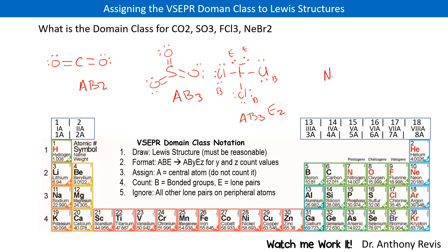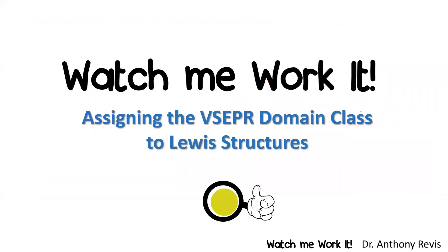The last one here, NeBr2. It's going to have two groups. I have to expand the octet by promoting two electrons in this case. And so now I've drawn the Lewis structure, and this is going to be an AB2E3. So that's how we would do it if we want to assign domain classes to Lewis structures.